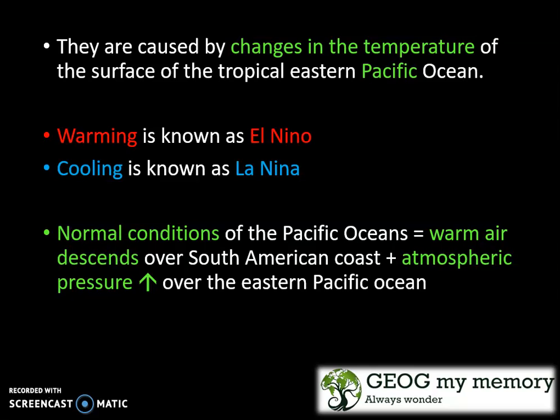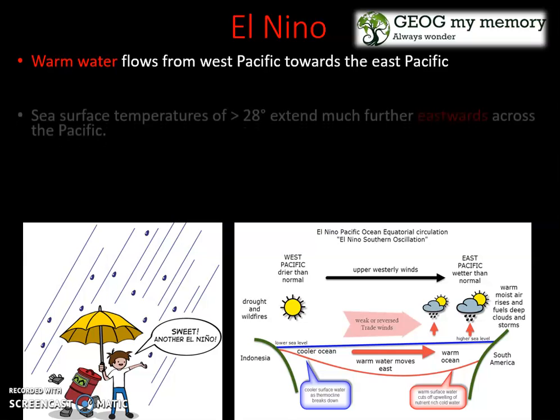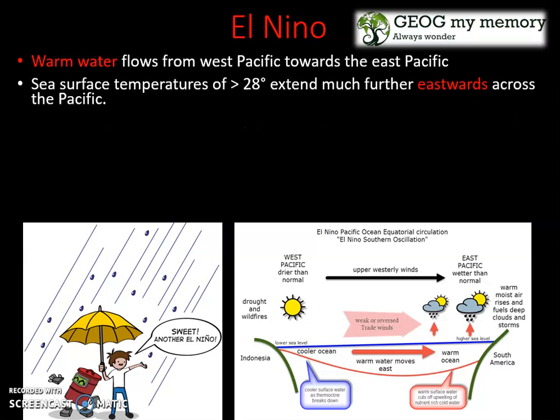warm air that descends over the South American coast, and the atmospheric pressure that increases over the eastern Pacific Ocean. Now let's look at El Niño. Warm water flows from the west Pacific towards the east Pacific. The sea surface temperatures of